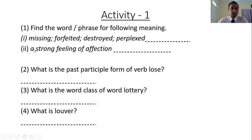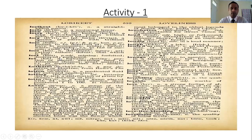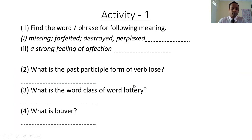Next question: 'a strong feeling of affection'. Here again a definition is given and you need to find the word related to this definition. Looking at the dictionary page: 'a strong feeling of affection — love'. So the answer is 'love', meaning the word which has this meaning is 'love'.